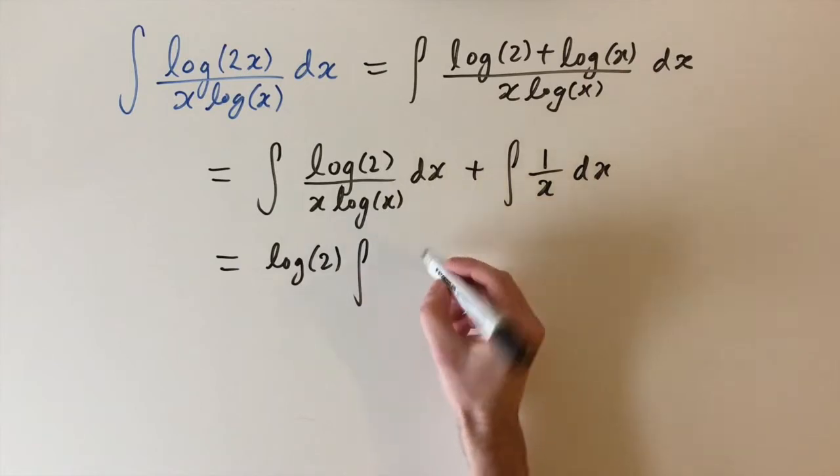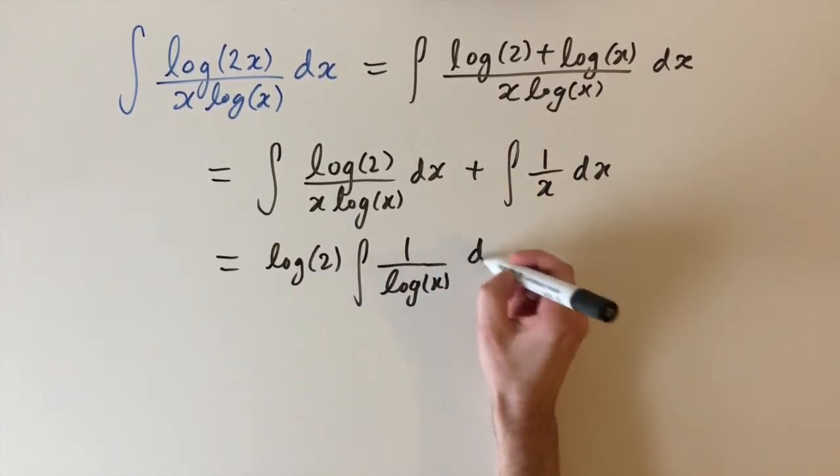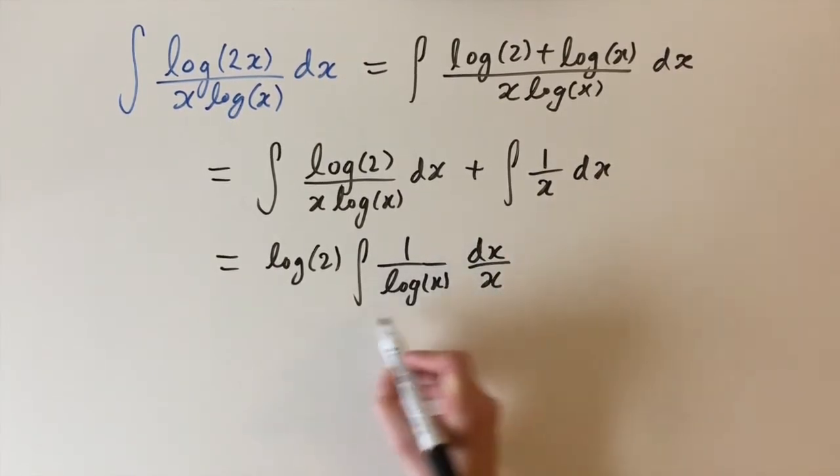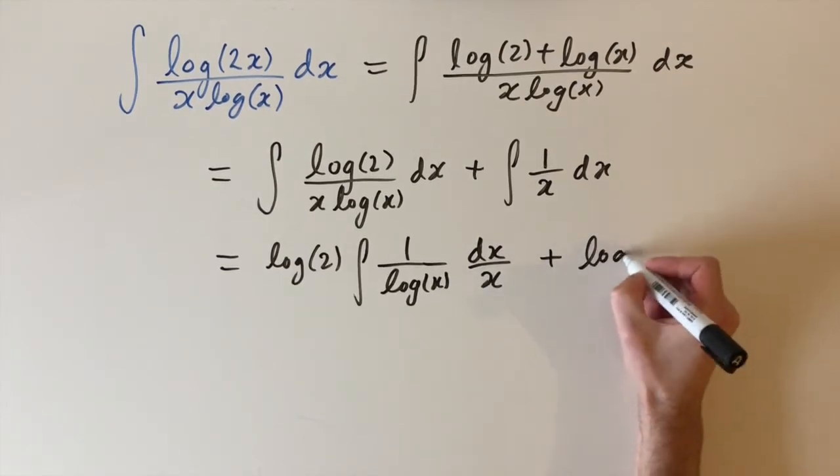And I'm going to write this slightly differently. I'm going to write this as 1 over log of x times dx over x. And I'll tell you why we did this in a second. We also have this integral, which we said was just the logarithm of x.